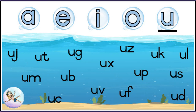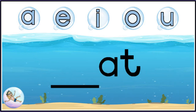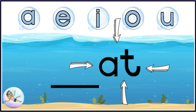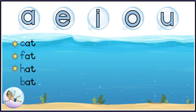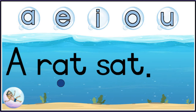Now let's try and make some words. Let's start with A. Remember, this is my bubble letter and this is my silly short sound — at. Can you think of a letter to put in front so that we can make a word? Let's see, I have a few here. Read them with me again. Well done! Let's try them in a sentence. Are you ready? A rat sat.